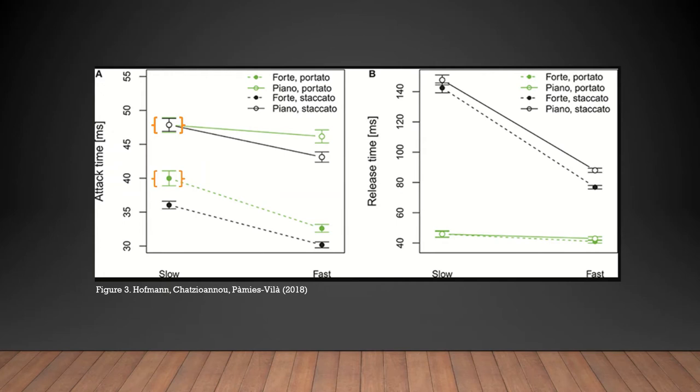This shows that for this test, a 0.07 millisecond difference indicates a significant influence. It is worth noting 0.07 milliseconds is an incredibly short amount of time. The fact that this small amount of time indicates a significant influence tells us how a small change in the attack envelope can impact the character of articulation. This also tells us that portato articulation has a faster attack envelope when performed more loudly.